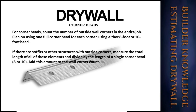We need to protect the drywall corners with corner beads. Count the number of outside wall corners in the entire job and plan on using one full corner bead per corner, using either 8-foot or 10-foot bead. If there are soffits or other structures with outside corners, measure the total length of all those elements and divide by the length of a single corner bead — either 8 or 10 feet.